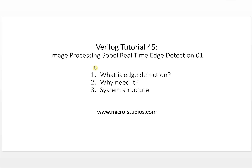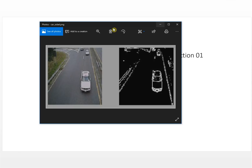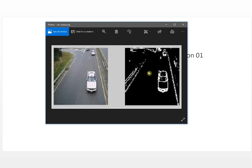There are three questions here. The first one is: what is edge detection? Edge detection is used in image processing to find the boundary of image objects. Let's take a look at this picture. This is the original one, and this is the result after applying the Sobel algorithm. You will see it shows the boundary of the object.